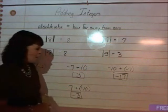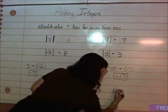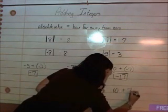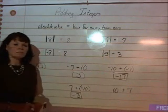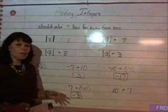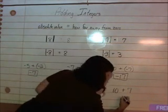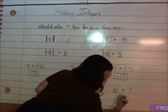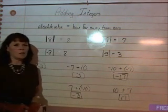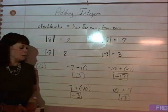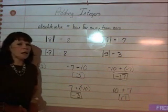One more. Let's say that we have ten plus seven. They're both positive, so you put them together. And you get seventeen. And it's positive. Pretty easy. See you next time.